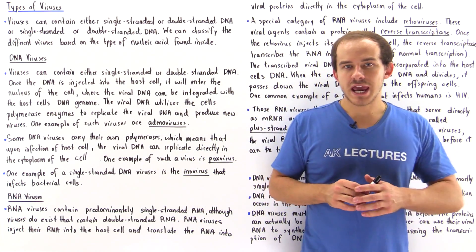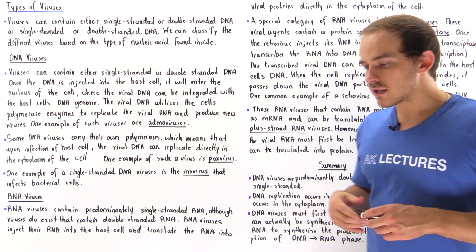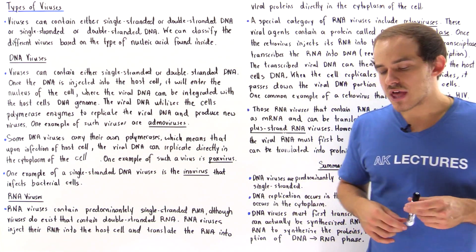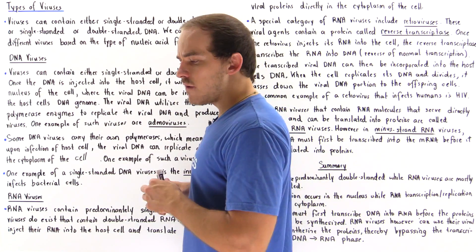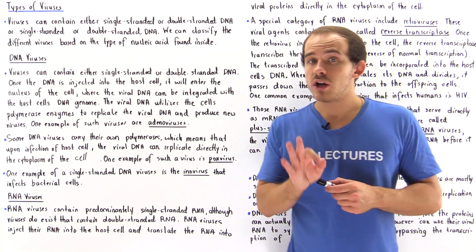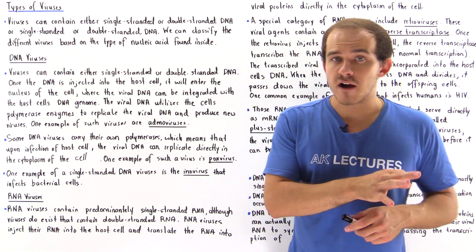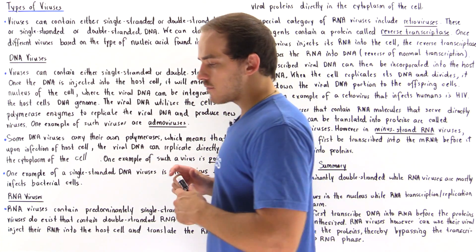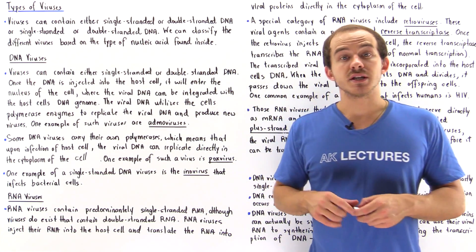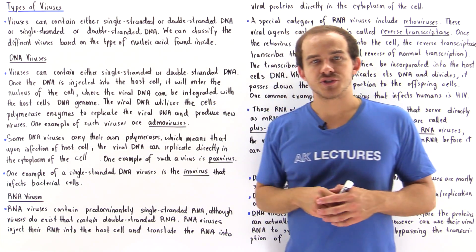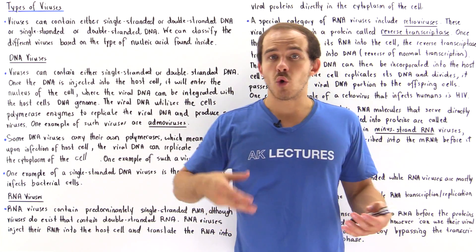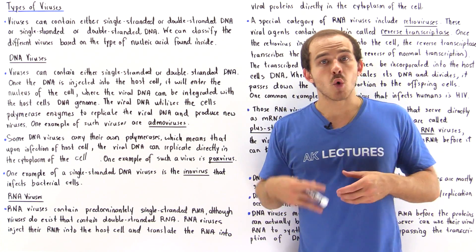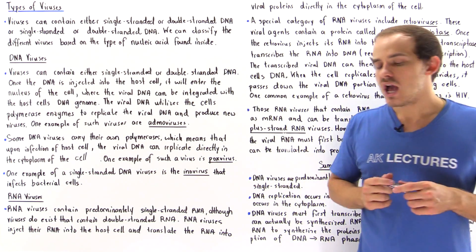Viruses are small infectious agents that can infect living cells and take over the processes that take place within that cell. There are many different types of viruses in nature, and one way to classify them is based on the nucleic acid found within the virus. There are two major categories: DNA viruses, which contain single or double-stranded DNA, and RNA viruses, which contain single or double-stranded RNA molecules.